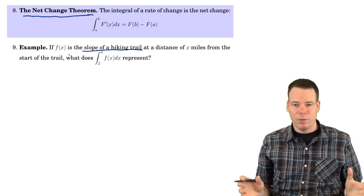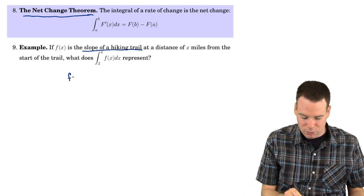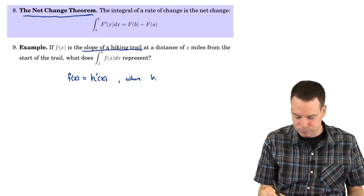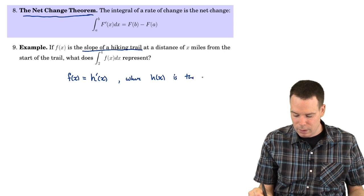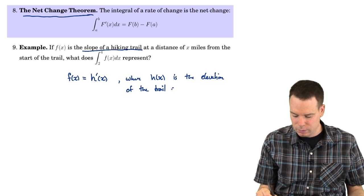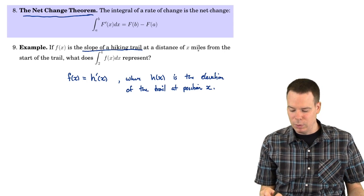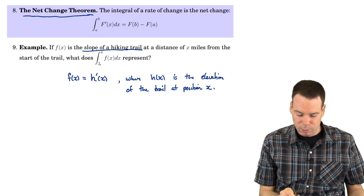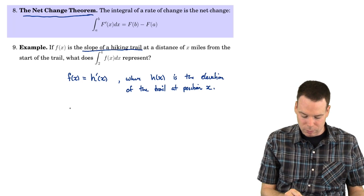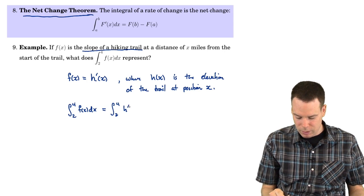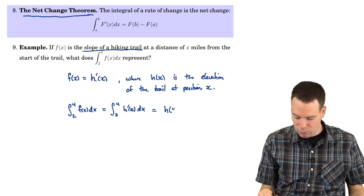So f(x) is the slope of a hiking trail — it is the rate of change of some quantity. Let's use h(x), where h(x) is the elevation of the trail at position x, and x is a distance measured in miles from the start of the trail. So f is the rate of change, and the question asks us to interpret what the integral from 2 to 4 of f(x) dx represents. That integral equals the integral from 2 to 4 of h'(x) dx.